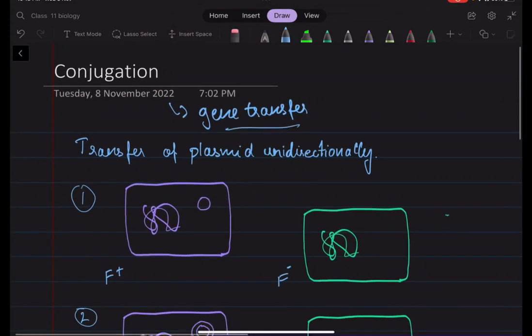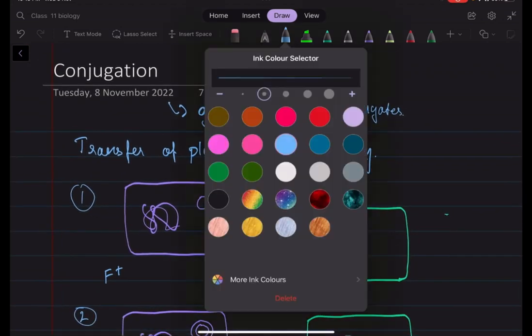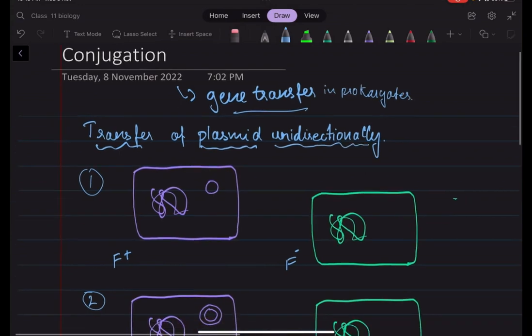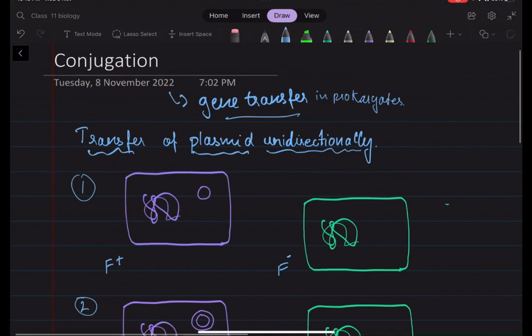This is also a process of gene transfer in prokaryotic cells. So in conjugation specifically, transfer of plasmid is seen unidirectionally, that means only in one direction. So it cannot happen the other way around.